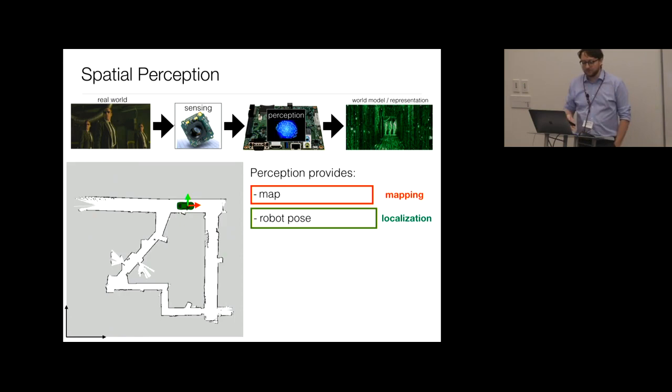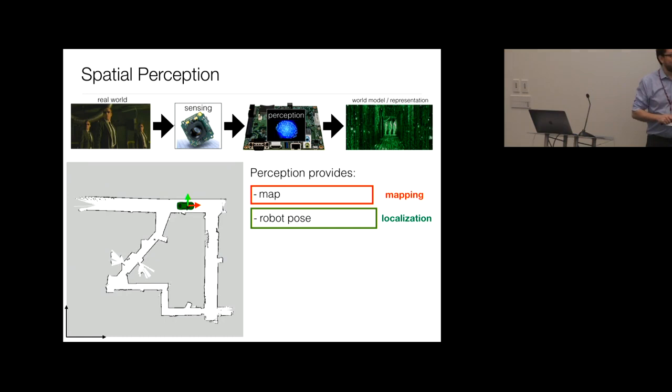How many of you know what a pose is? A pose is essentially a rotation plus a position — it's the description of where the robot is: its XYZ position plus its attitude, or orientation.